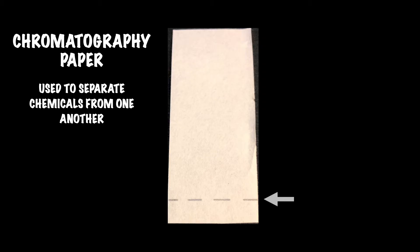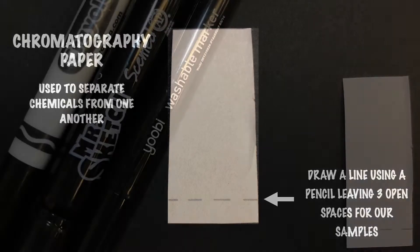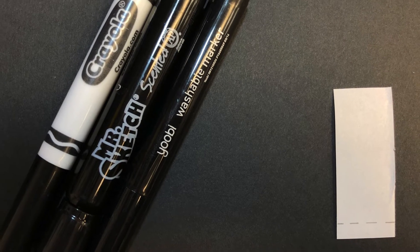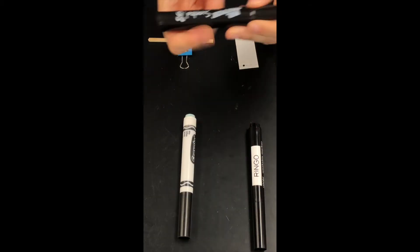Along the bottom, we've taken a pencil and marked a line, and we've left three spaces where we're going to dot our samples. In this case, our samples are our three markers, so we're just going to put a spot of each marker in each of those spaces.